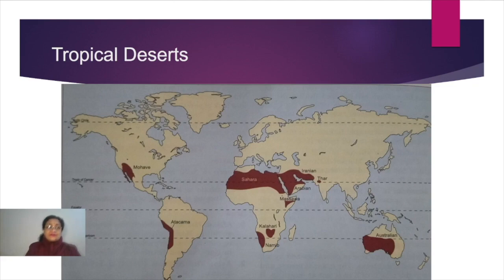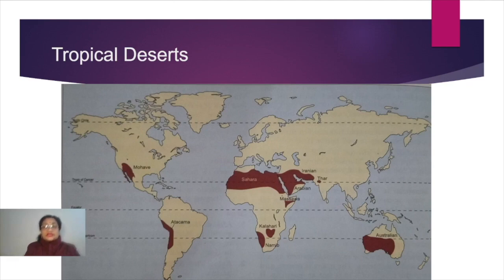The main crops grown in such hot desert climatic conditions include date palms, barley, cotton, wheat, and fruits and vegetables. These are the main crops that grow in the hot deserts, otherwise known as tropical deserts.